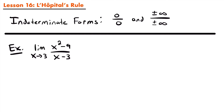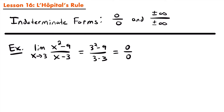If we go back a little bit in calculus, remember that if we had a limit that was in an indeterminate form, we were typically able to rewrite that limit in some way in order to evaluate it. So right here we have a limit as x approaches 3 of x squared minus 9 divided by x minus 3. If we plug in 3 for x, we get 0 divided by 0 because 9 minus 9 is 0 and 3 minus 3 is also 0.